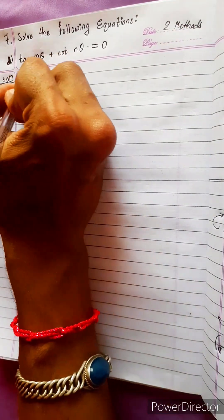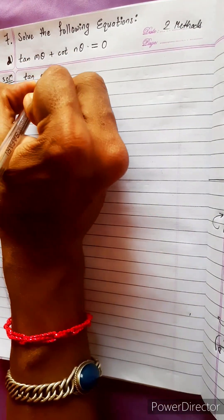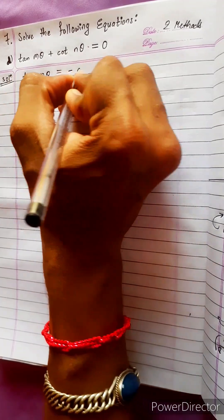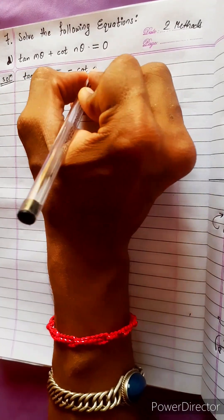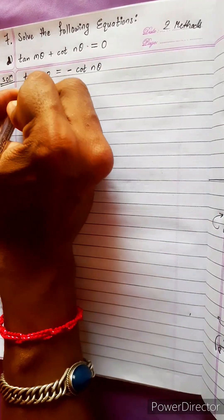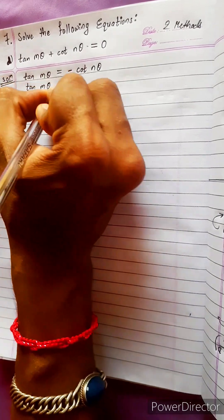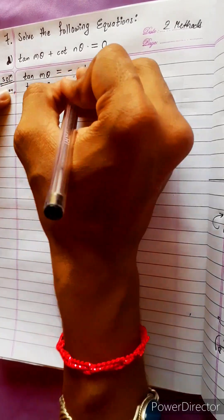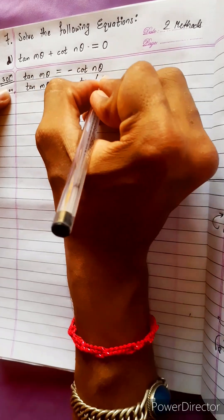One is by tan cot. Write here directly tan m theta equals to minus cot n theta. Then after that write tan n theta equals to - to make it tan what can we do? We do tan 90 minus theta.